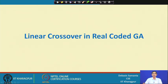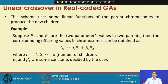Let us first learn about the linear crossover technique for the real coded GA. In this technique, we use some linear function — that is why it is called linear crossover — a linear function of the parent chromosomes to produce the new children.